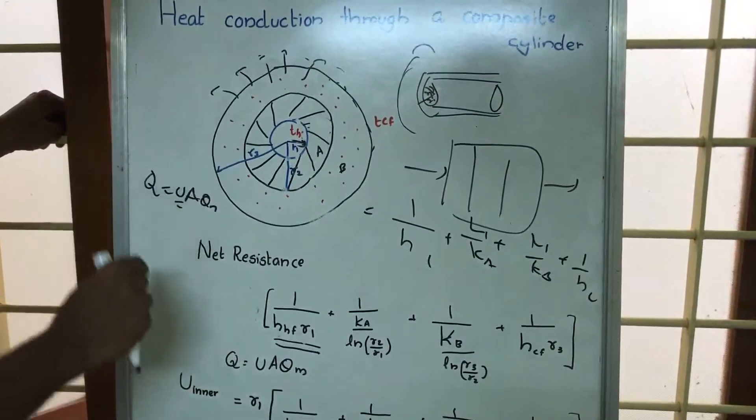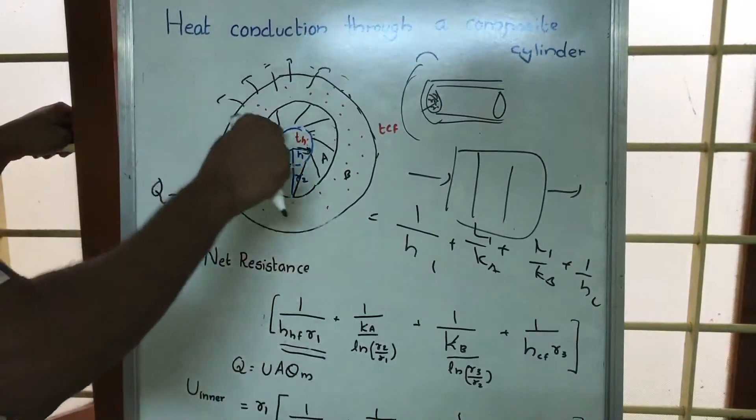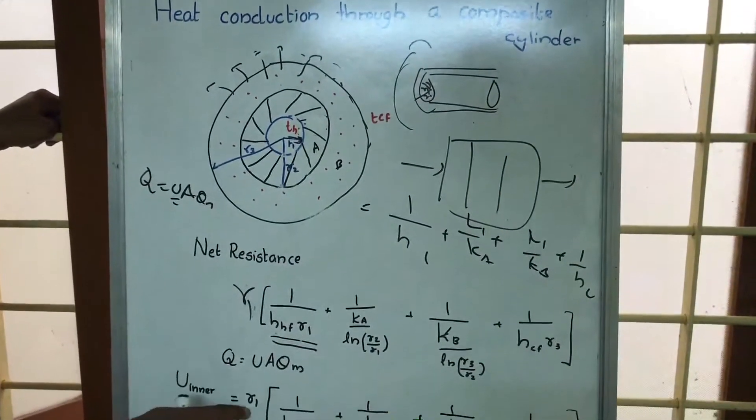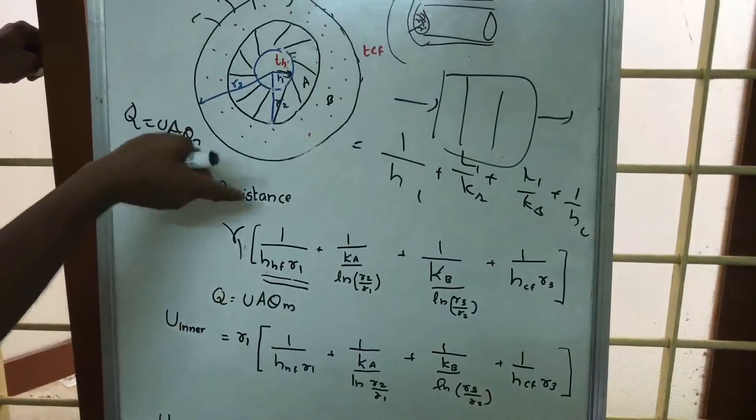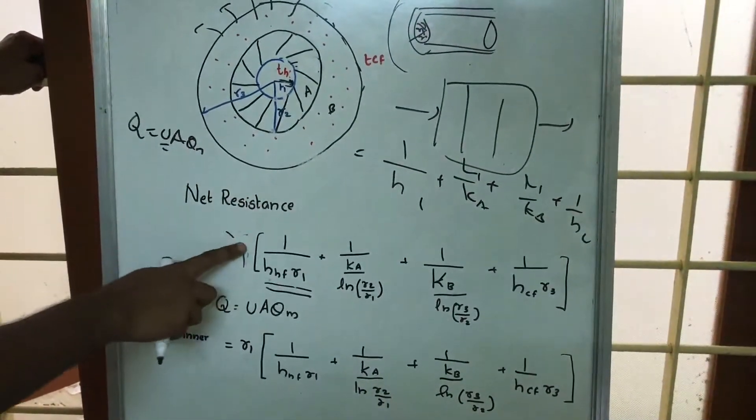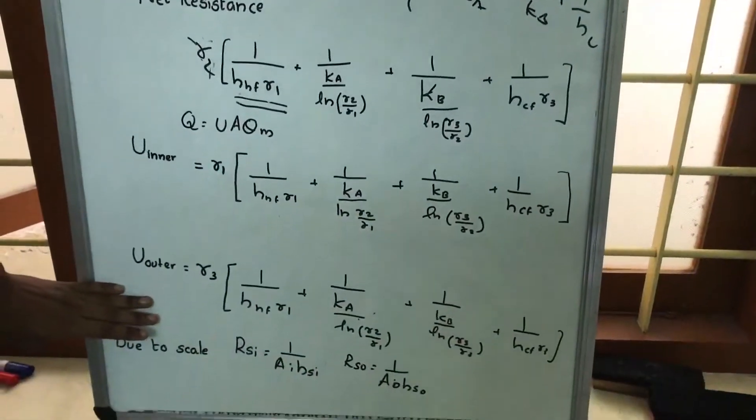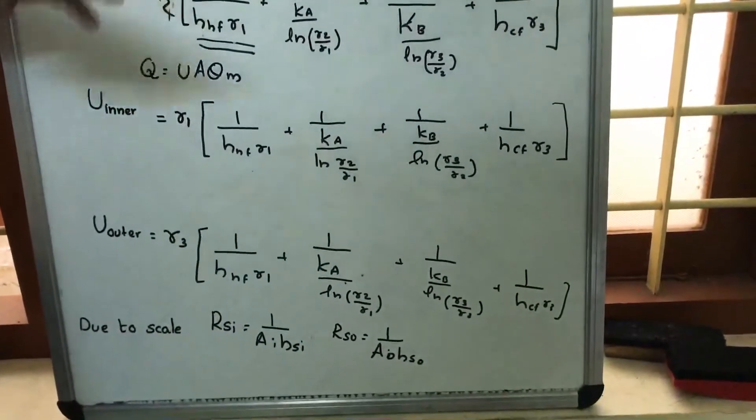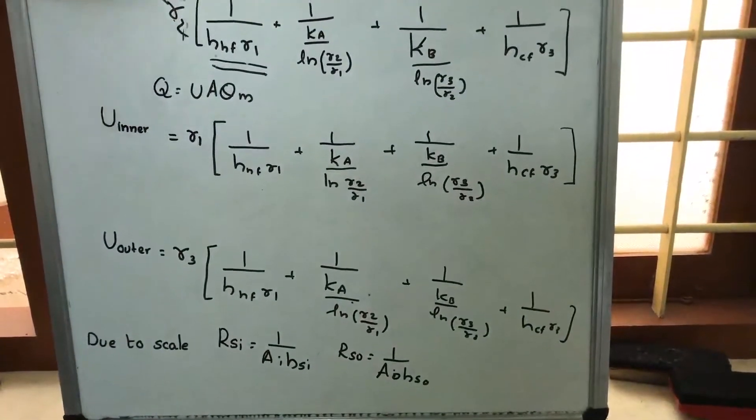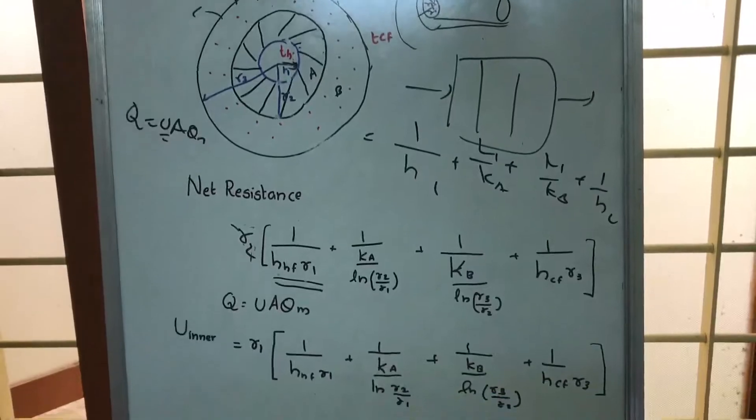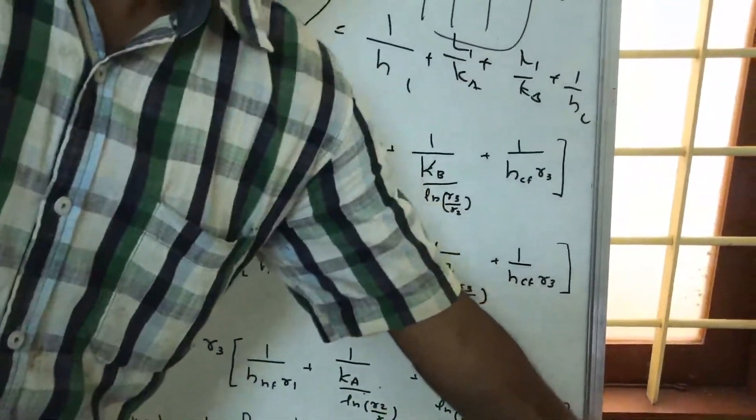If we are to find U of the inner surface, multiply with the inner radius R1. If you are to find U of the outer surface, multiply with R2. This is how you get U inner and U outer. This can be expanded for heat exchangers, so that we are able to obtain the heat transfer coefficient for heat exchangers.